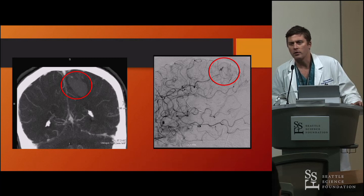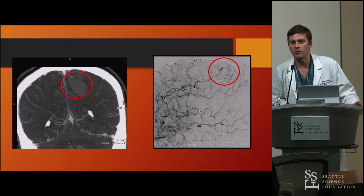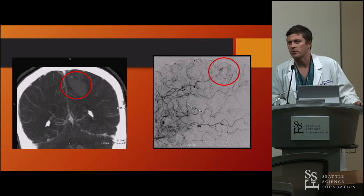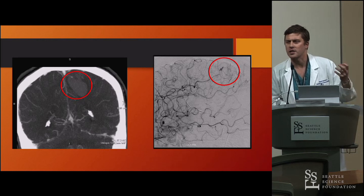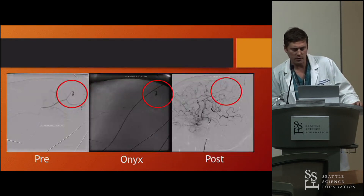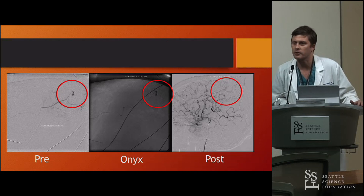Depending on where it is, if it's in a frontal branch that's going to nowhere, then typically we can go up with a microcatheter and either use onyx or coils, whatever your choice is. If it's in a region of eloquent brain, then that's when you have to do trap and bypass distal to that. Typically at surgery, if you just clip these things, the vessel just falls apart right in front of you — it's all diseased, kind of like wet tissue paper. In this one, we just sacrificed the vessel with onyx and got a nice result without any clinical sequelae.